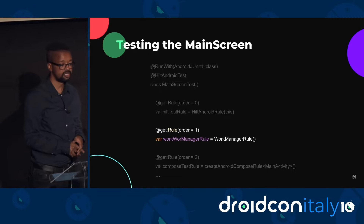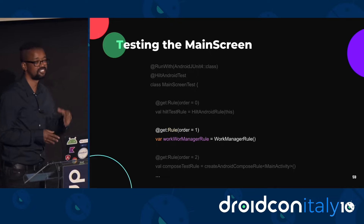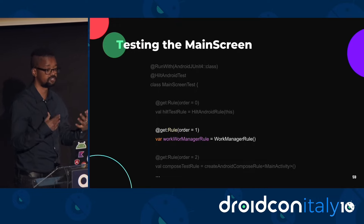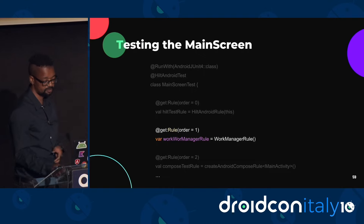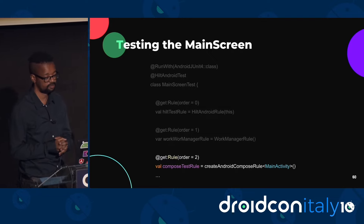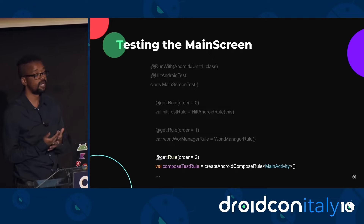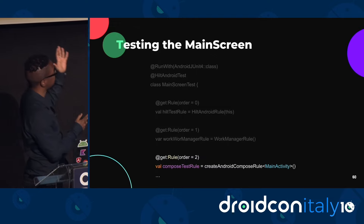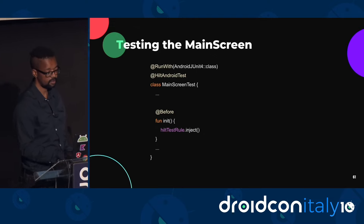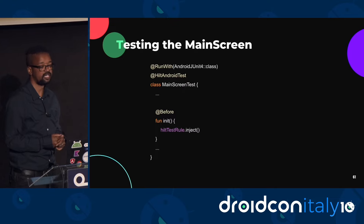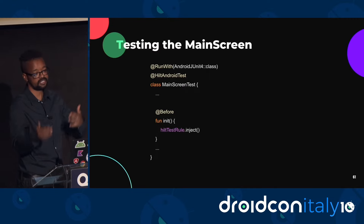I use WorkManager in my app to periodically update different sections such as the dashboard, the explorer, and user-favorited screens. The rule for WorkManager is also required here for my test to run. The last rule I specified is the Compose test rule, using a function called createAndroidComposeRule — a factory method providing an Android-specific implementation tied to an activity, in this case main activity. The Hilt rule requires that the inject rule is called before tests are executed, so I specified a function with the @Before annotation.